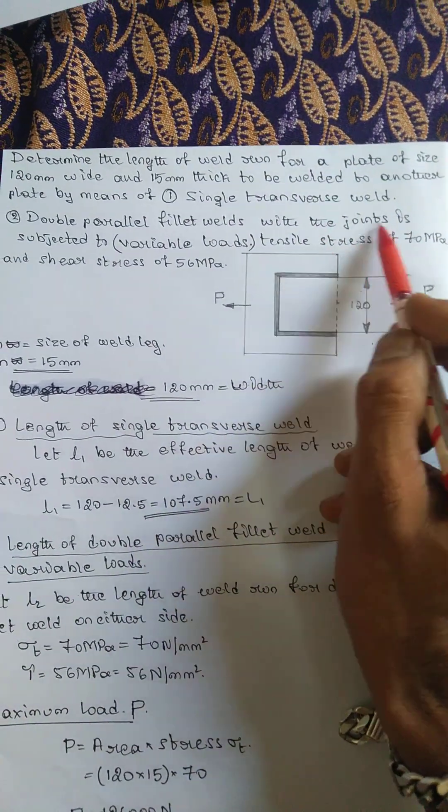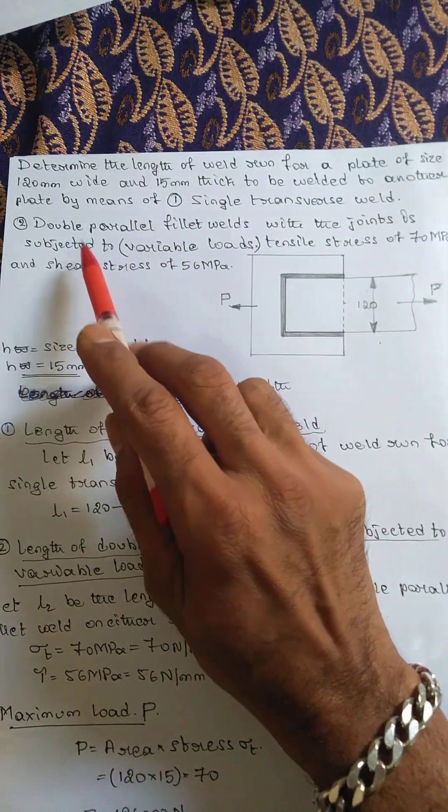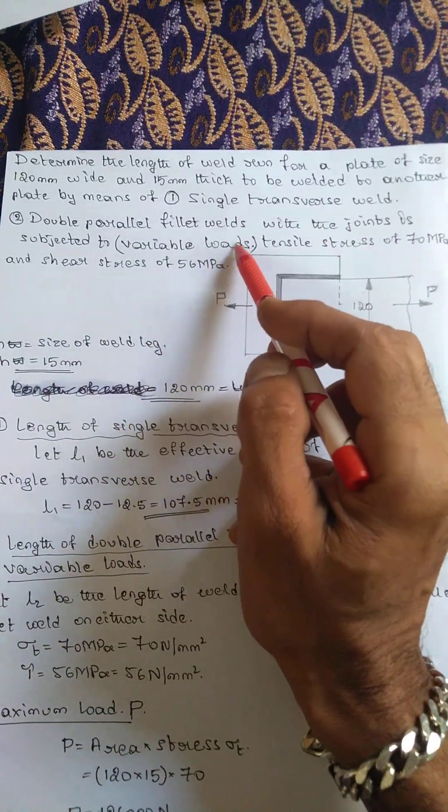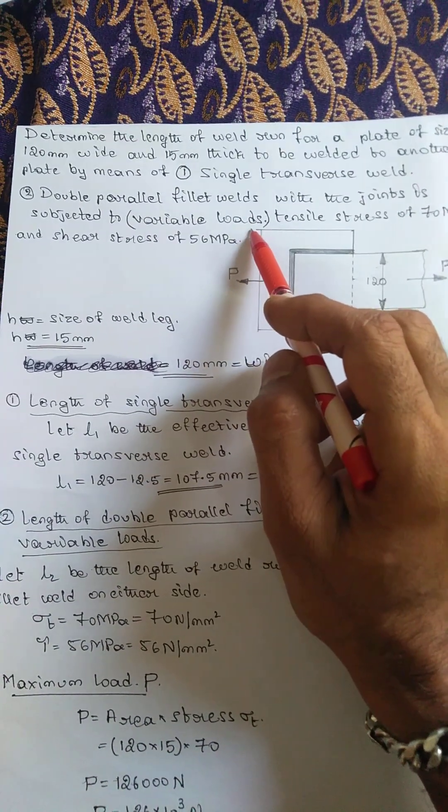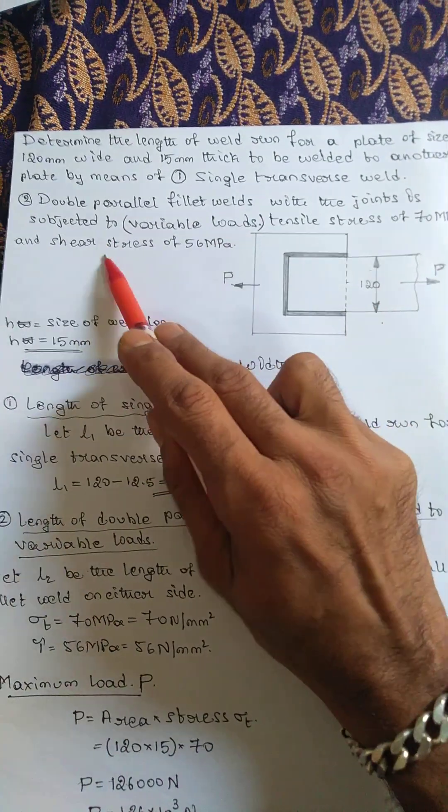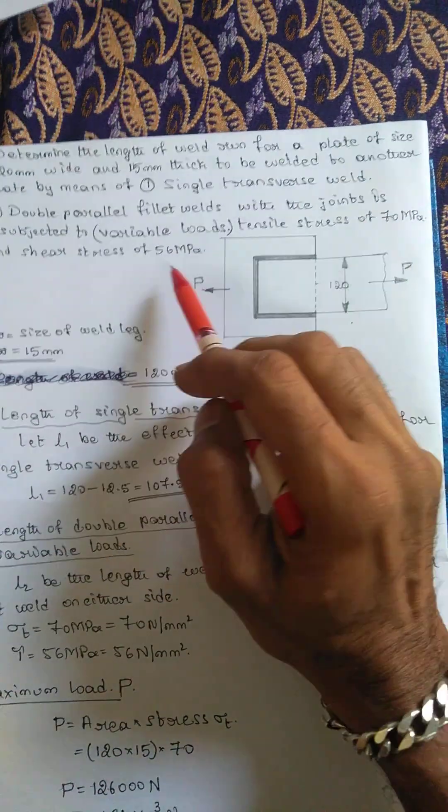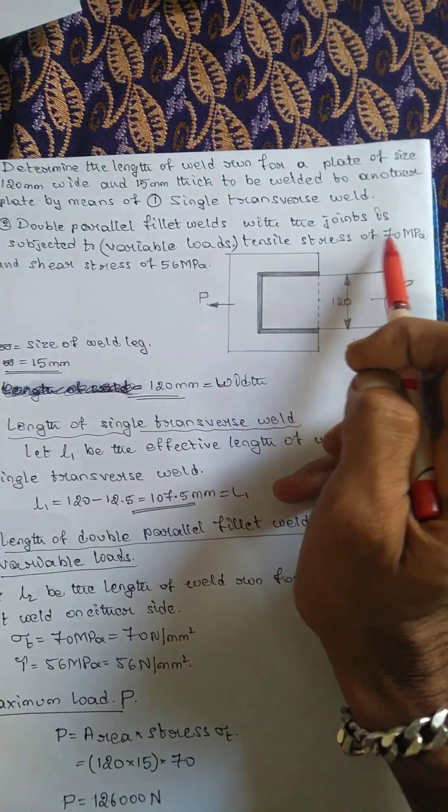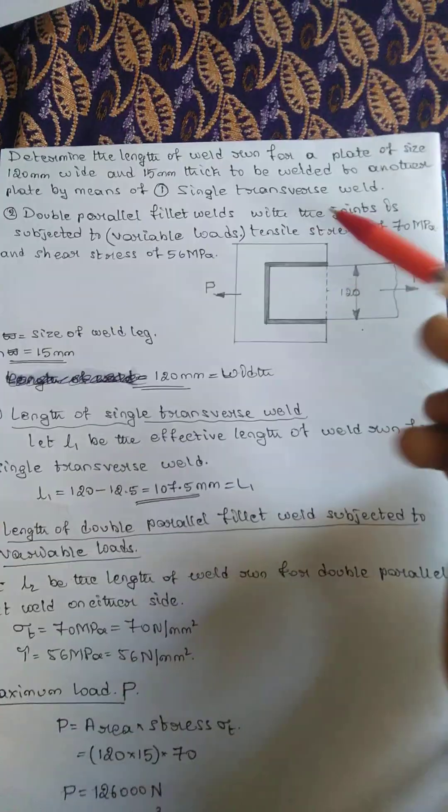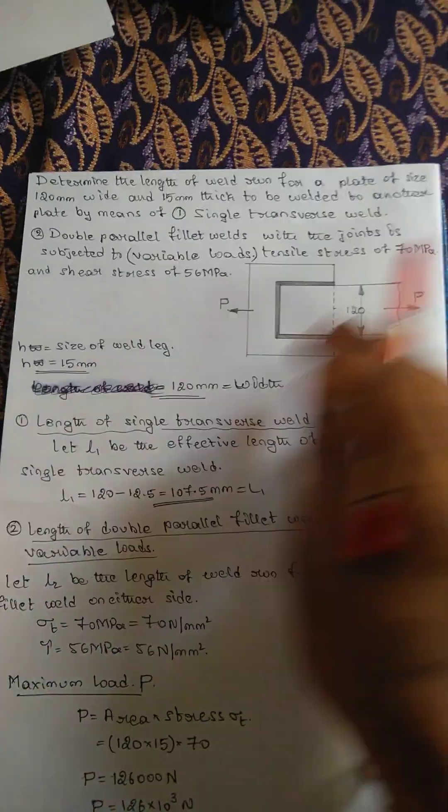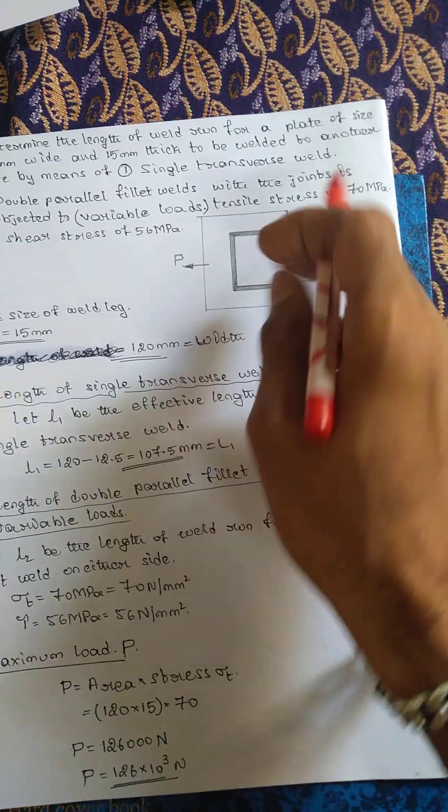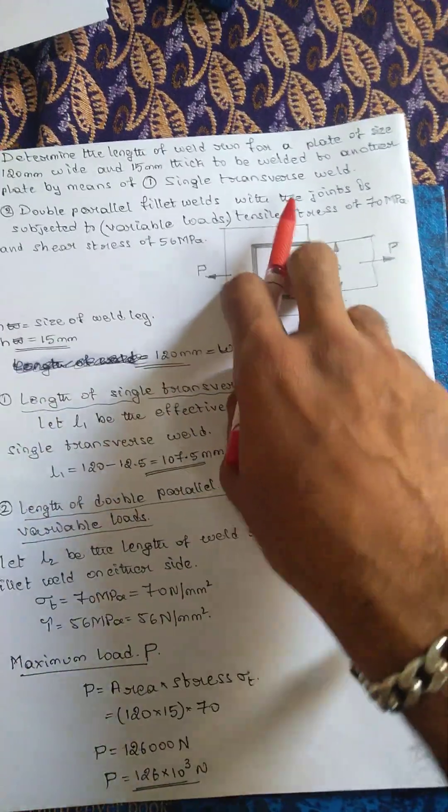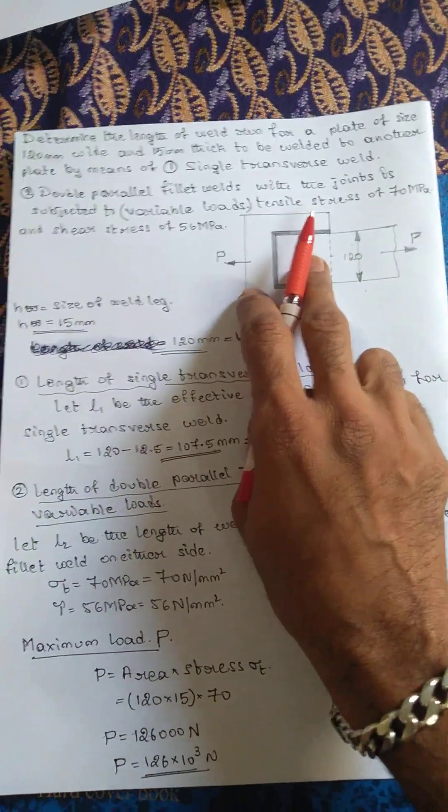The joint is subjected to variable loads. Sometime they may give this value or else sometime you may need to assume, but try to remember this value. Most of the time they will be using this value. In the question paper they may give you this kind of sketch or else you may have to consider this kind of sketch and start solving the problem.